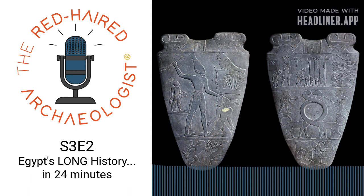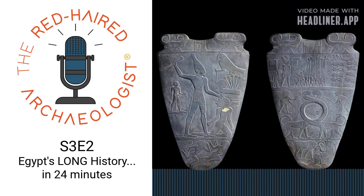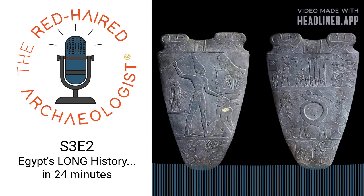Before we get into that, I want to start with describing some date designations. If you've been listening to me for a while, or if you've read any of my books, then you know that I tend to use BCE and CE as opposed to BC and AD most of the time. For this series, we're talking about Egypt's history, and using a specifically Christian dating system just doesn't make a whole lot of sense for this particular set of material.